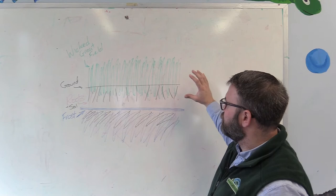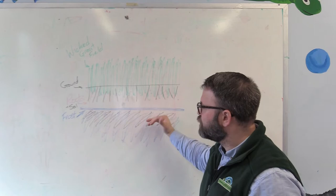Here on this lovely diagram, we've got some awesome grass up here and it looks fantastic, but underneath the surface we still have some frost and some frozen ground.